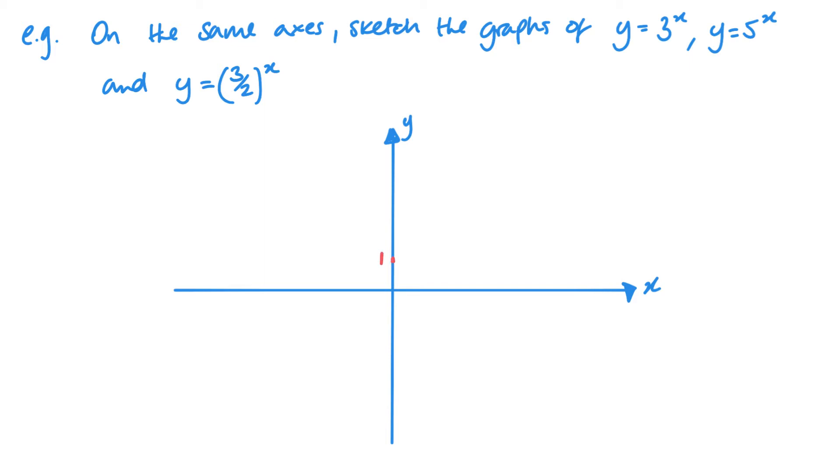They're all going to go through this point on the y-axis. As my values of x are positive, so I'm looking at the right of the y-axis, I know that y equals 3^x and y equals 3/2 to the power x are going to go from the same point, but 3/2 is not going to be as steep. And when I look at y equals 5^x, that is going to be the steepest one.